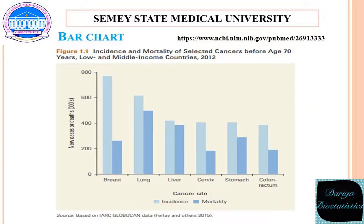A bar chart is a graphic that uses two or more rectangles along with vertical and horizontal axes to represent information. When the rectangles are placed vertically, the chart is often called a column chart. When placed horizontally, it is called a horizontal bar chart. The given bar chart presents incidence and mortality of selected cancers before age 70 in low and middle income countries in 2012. It is clear from the bar graph that incidence of breast cancer and mortality of lung cancer took first place.